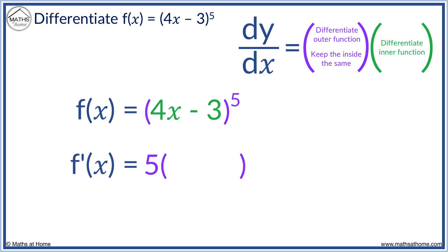5 minus 1 equals 4. We keep the inside of this bracket the same. 4x minus 3 remains as 4x minus 3. Next we must remember to multiply this by the derivative of the inner function. We differentiate 4x minus 3. This is just 4.